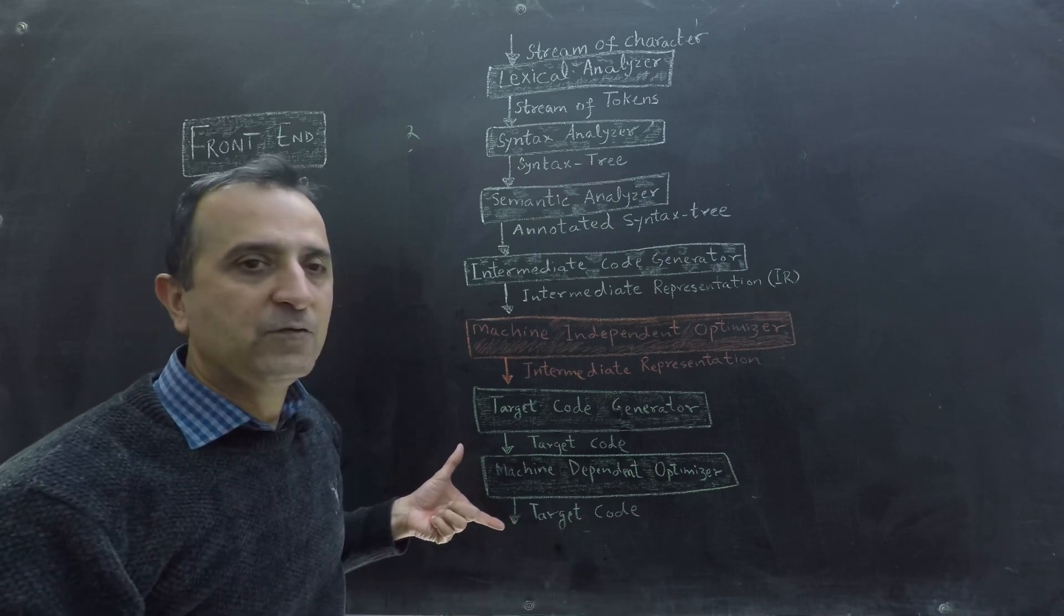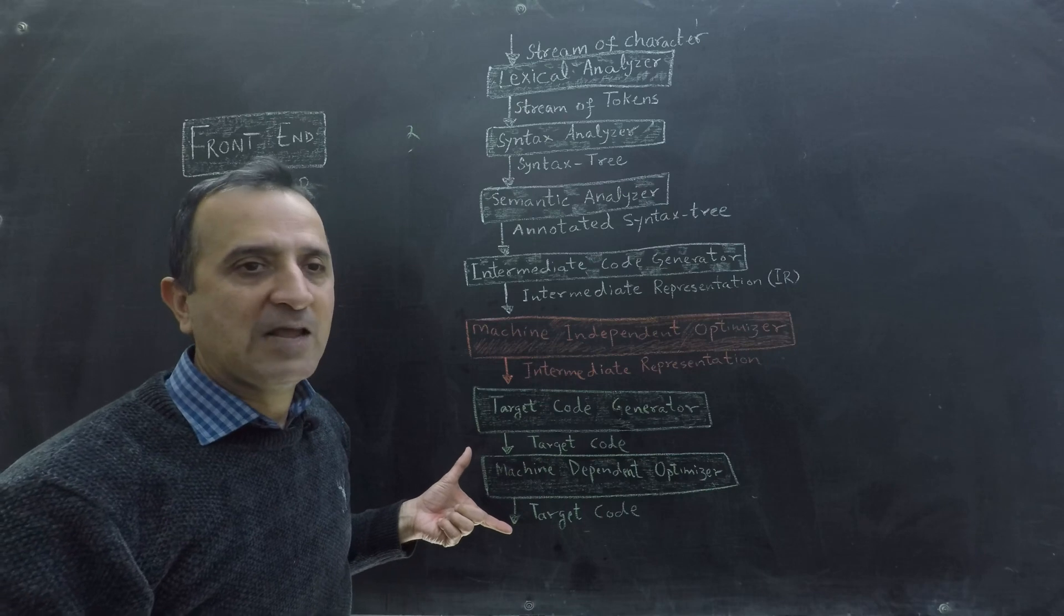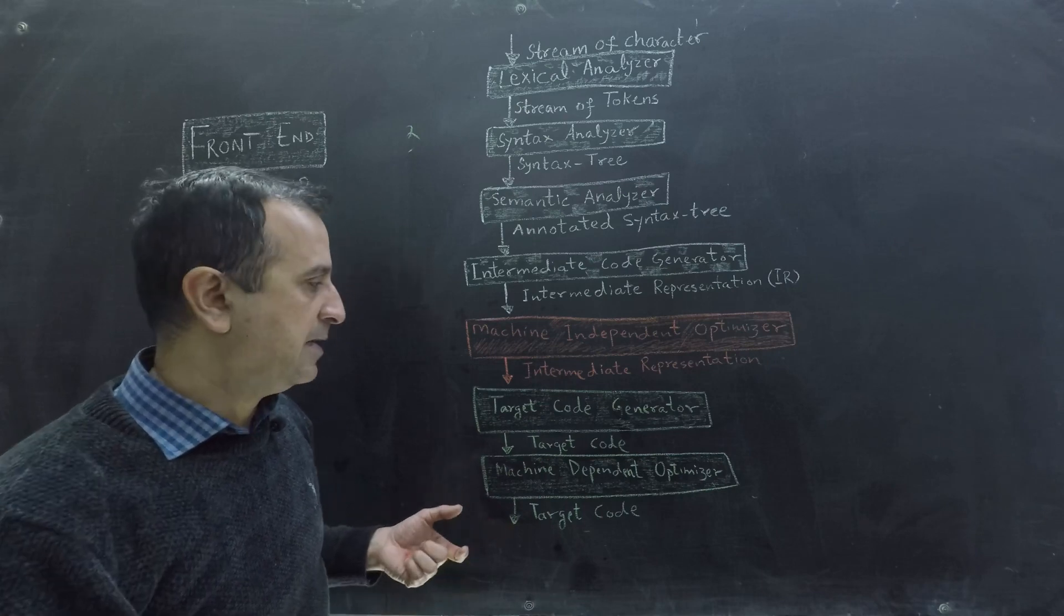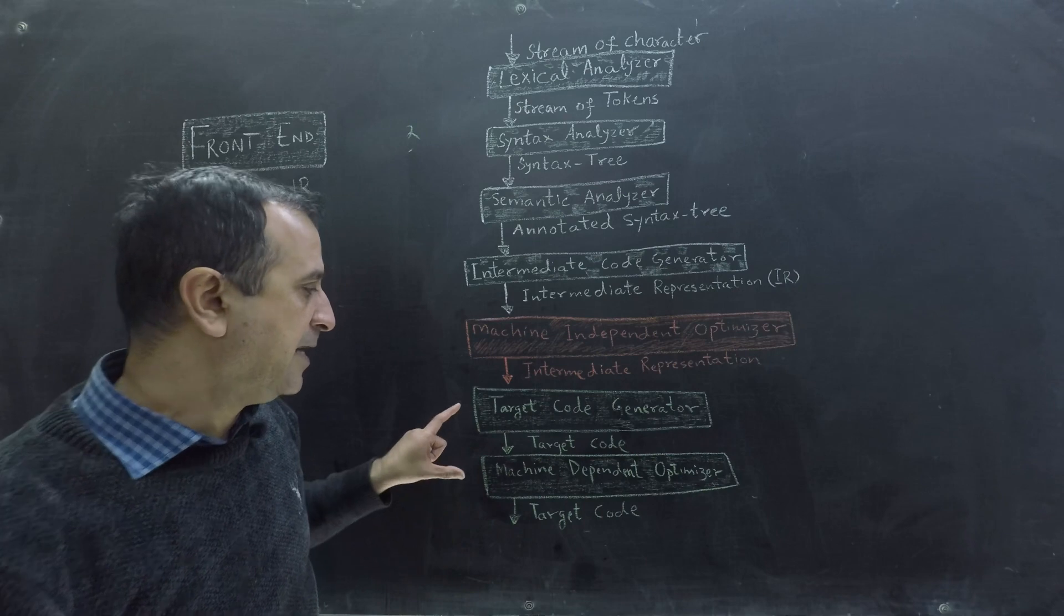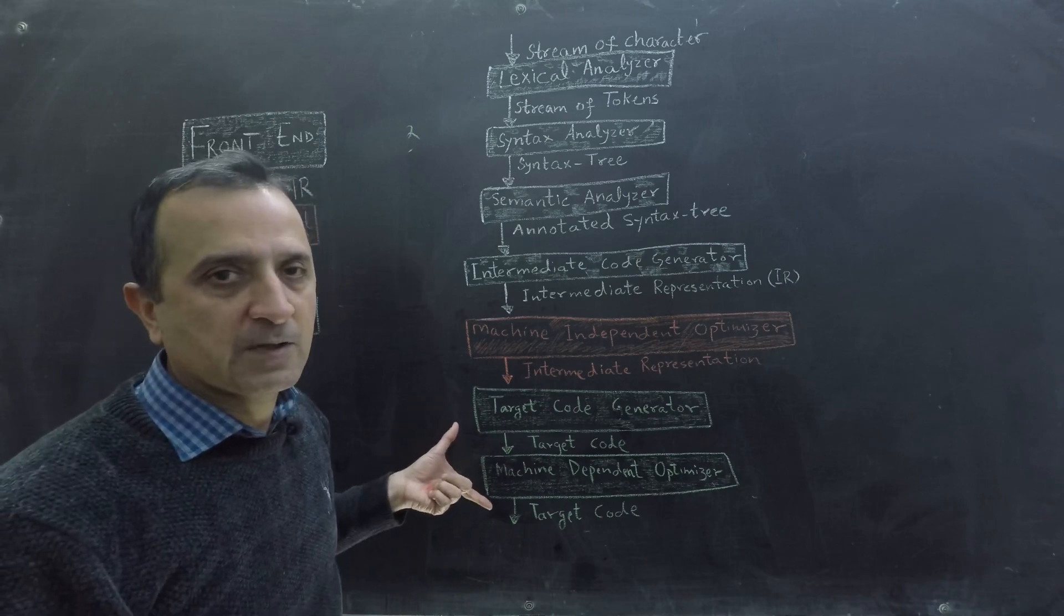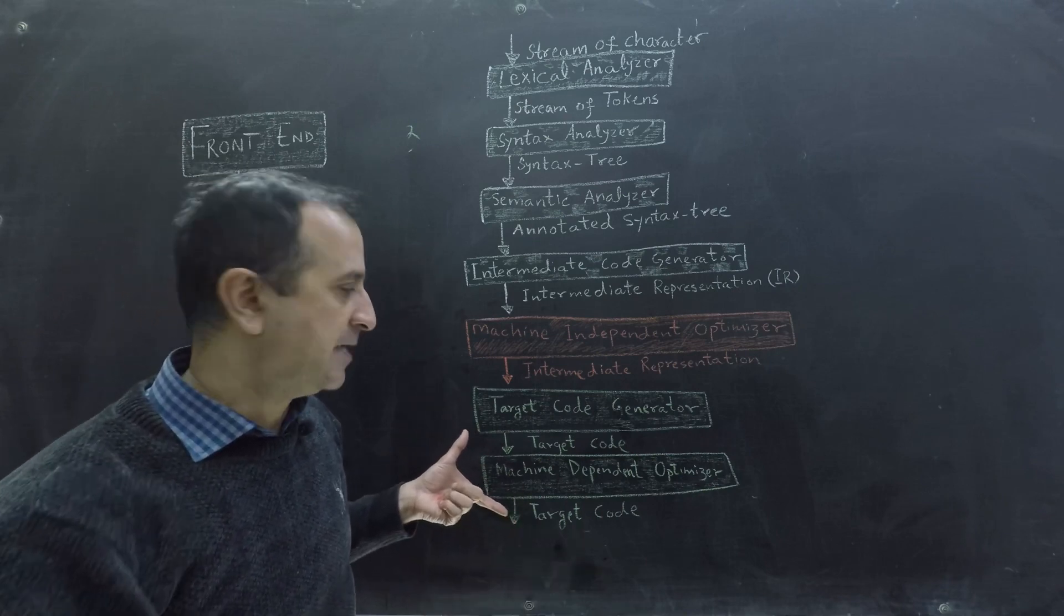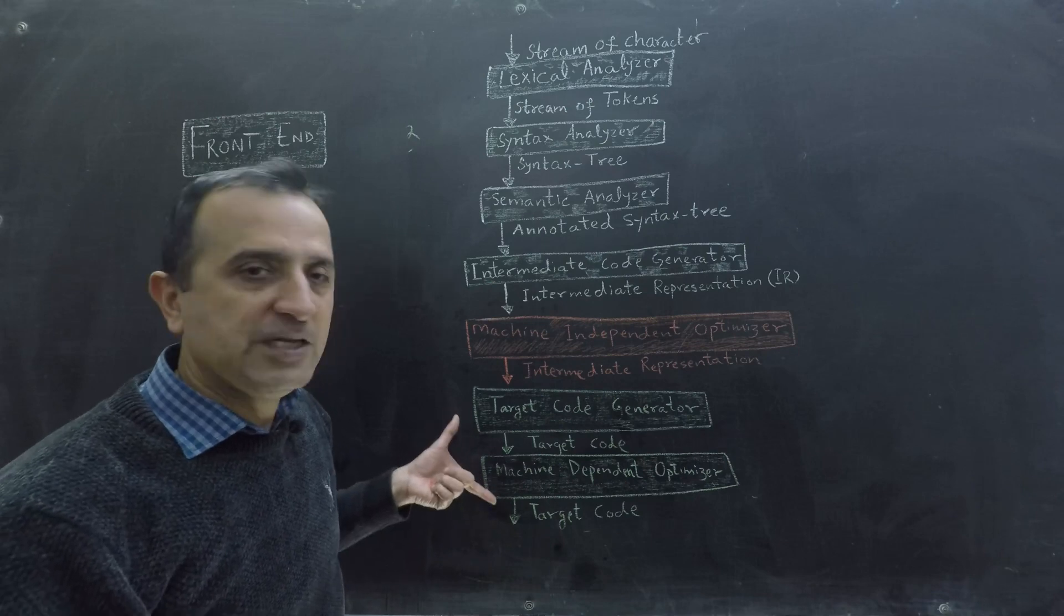So if I have to run my programming language in two different target machines I have to write two different implementation of these phases. For each machine I must write a new implementation of these two phases.